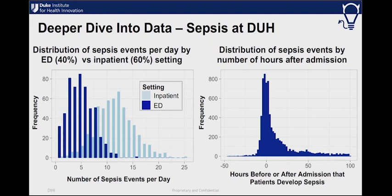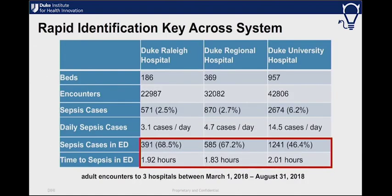The next step was to figure out where this event actually happens within our healthcare system. On the left hand side, we distinguish between events that happen in the emergency department and events that happen in the inpatient setting after a patient is admitted. About 40% of events occurred in the emergency department, and the histogram on the right hand side shows the distribution of time of sepsis. Hour zero is the time of admission when the physician places the order for the bed, so the bulk of the distribution occurs right around admission — meaning detection needed to happen quickly and early.